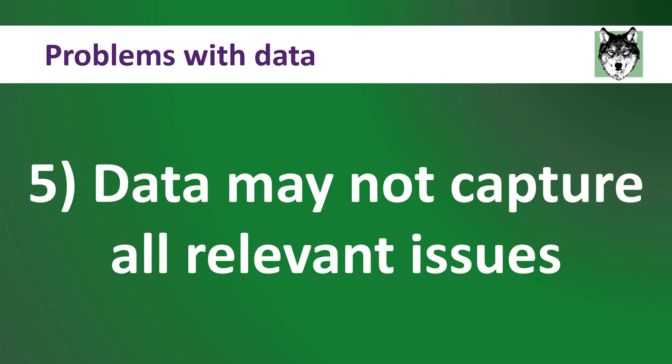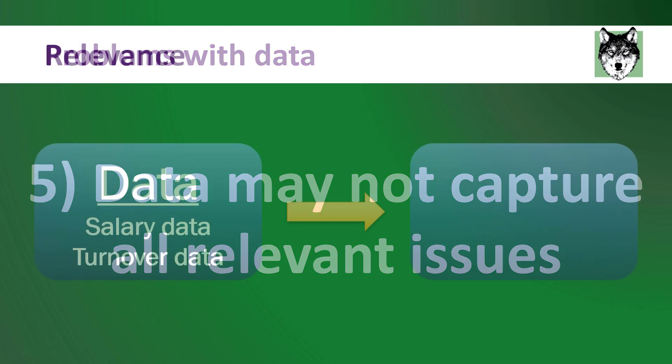Number five: data may not capture all relevant issues. Many decisions are complex, and data sets may be too narrowly defined to support complex decisions with multiple stakeholders. For instance, if you're making decisions regarding employee compensation, bonuses, vacation, or training, you can look at salary or turnover data fairly easily. But the question is, does that data really capture employee morale? Are your employees happy? Will your salary data tell you about happiness? That's an incomplete data set and may not lead to the correct decision.